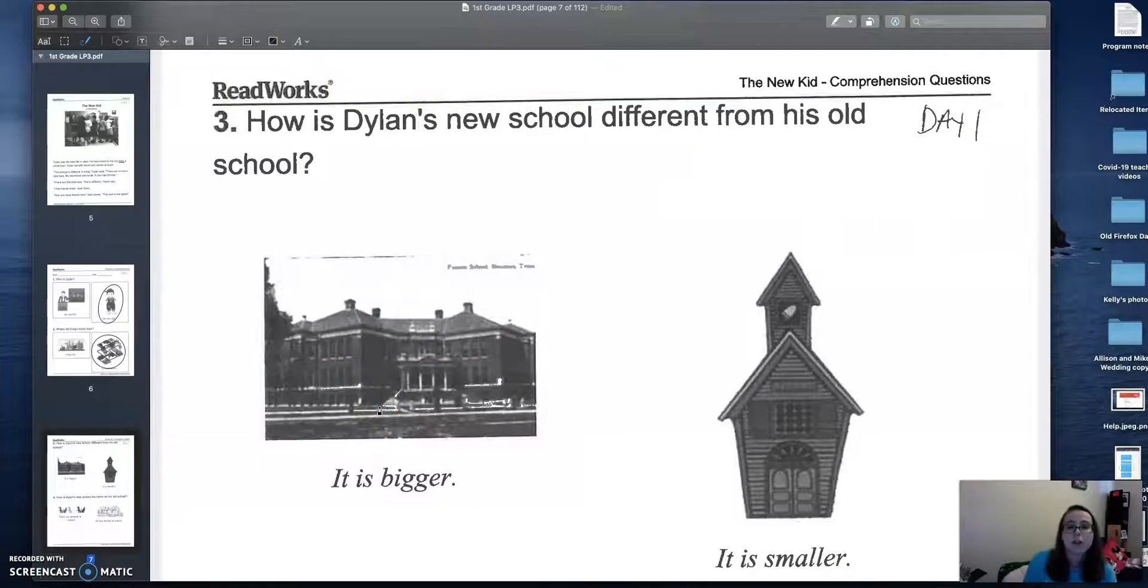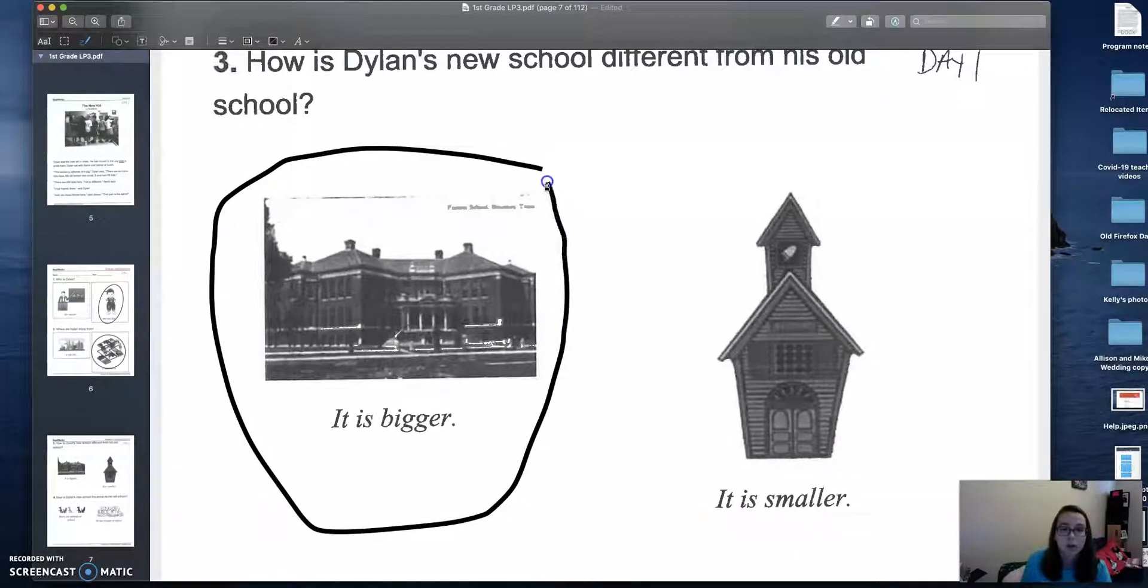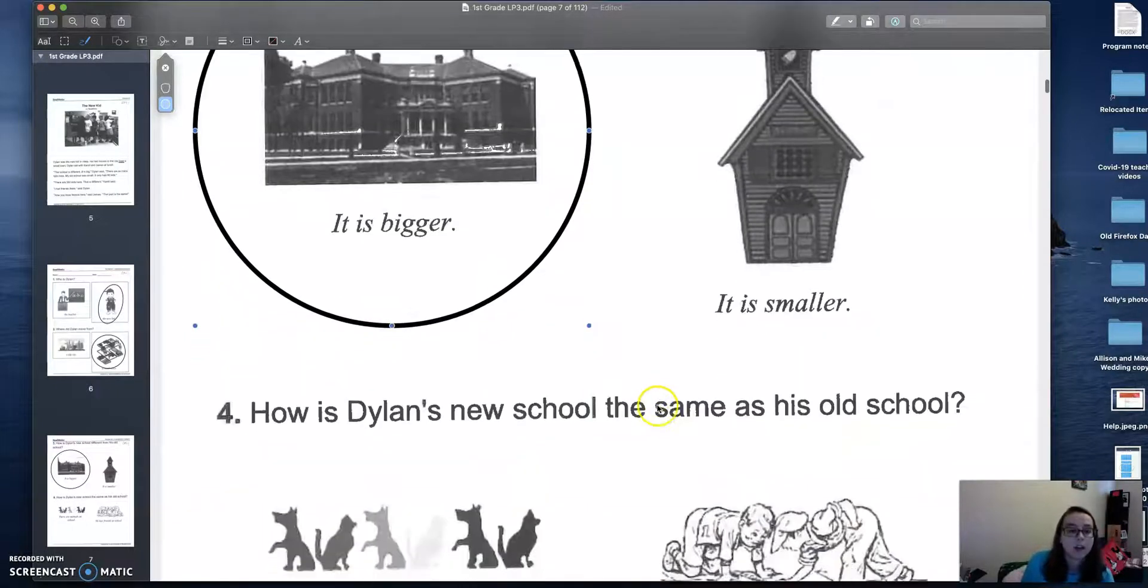How is Dylan's new school different from his old school? Is it bigger or is it smaller? Well, if you live in a small town, do you have a really big school where you have 500 kids? Or do you have a small school with only 50 kids? Right. So his old school was smaller. So this school is going to be bigger. So we are going to circle that one.